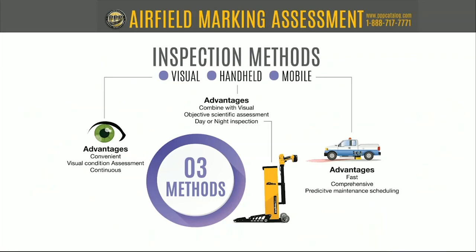What's really important with handheld is that it's objective — it is a scientific assessment. It's not a matter of 'that line looks bright enough'; you actually have a number to go by, and that's the critical point for roadways and runways. With a retroreflectometer, you can do a day or night inspection of that marking. You don't have to go out at night and hit your headlights and make a subjective judgment. These instruments can be used in daylight when you've got your runway shut down for a couple hours for maintenance.